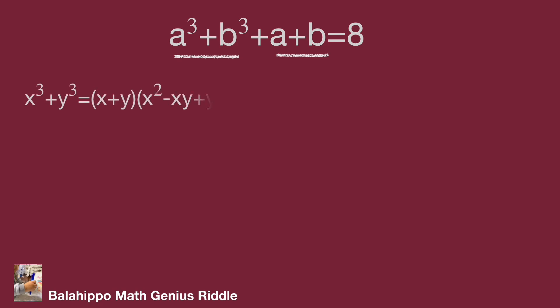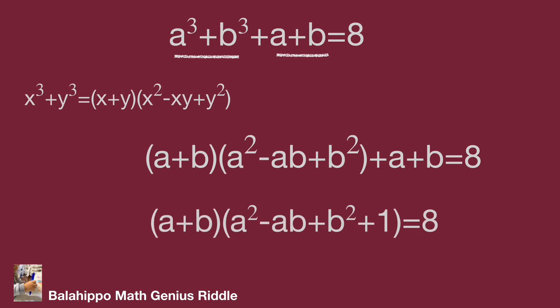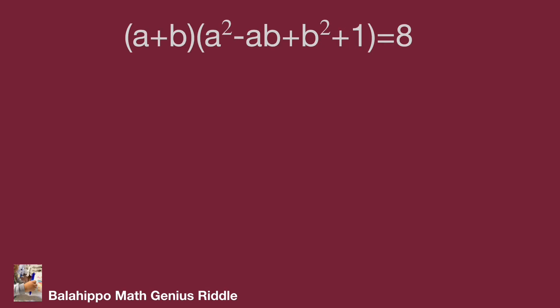Using the formula x cubed plus y cubed equal to (x plus y)(x squared minus xy plus y squared), we adapt this to a cubed plus b cubed. The equation becomes: (a plus b)(a squared minus ab plus b squared) plus (a plus b) equal to eight. Factoring out (a plus b): two times (a plus b) times (a squared minus ab plus b squared plus one) equal to eight.